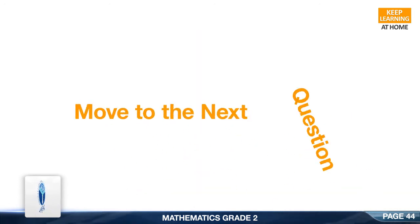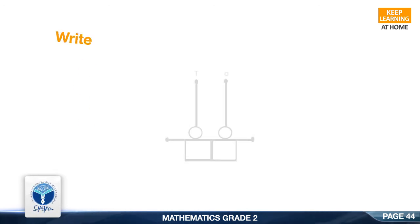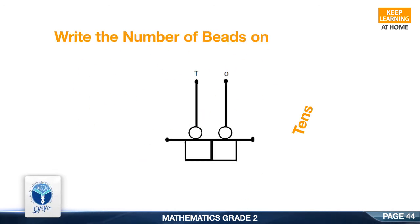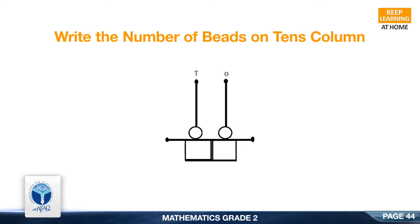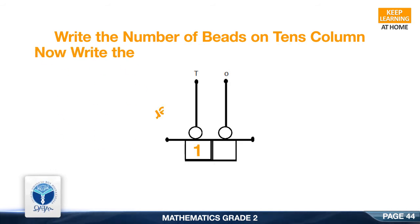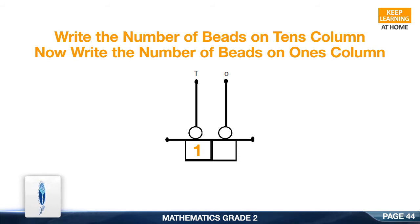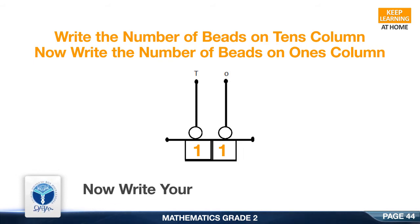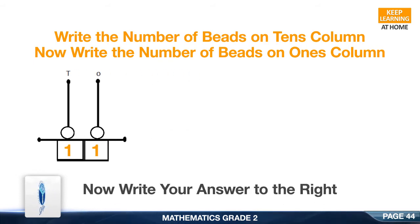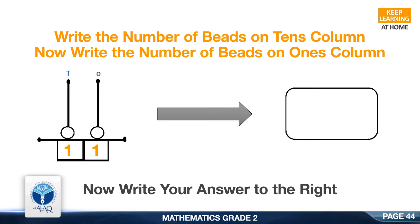Move to the next question. Write the number of beads on the 10's column. Good, it is 1. Now write the number of beads on the 1's column. Good, it is 1. Now write your answer to the right. Good, it is 11.